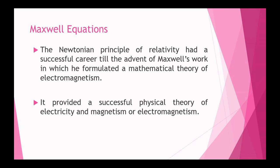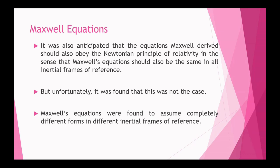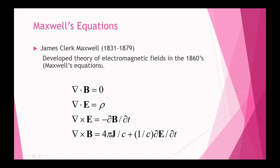Newtonian relativity had a successful run until the advent of Maxwell's work, which formulated a mathematical theory of electromagnetism. It was anticipated that Maxwell's equations would obey the Newtonian principle of relativity — that is, they would take the same form in all inertial reference frames, just as F' = F was shown for Newton. Unfortunately, it was found that this was not the case: Maxwell's equations assumed completely different forms in different inertial reference frames.